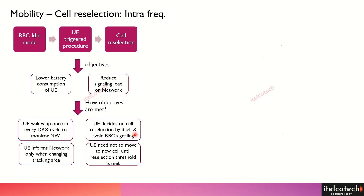The UE decides to reselect by itself, but there are certain thresholds that are defined in the network and are embedded in the system information blocks. There is different system information transmitted from the network to the UE to inform that if a particular threshold is met, you need to perform this particular task.